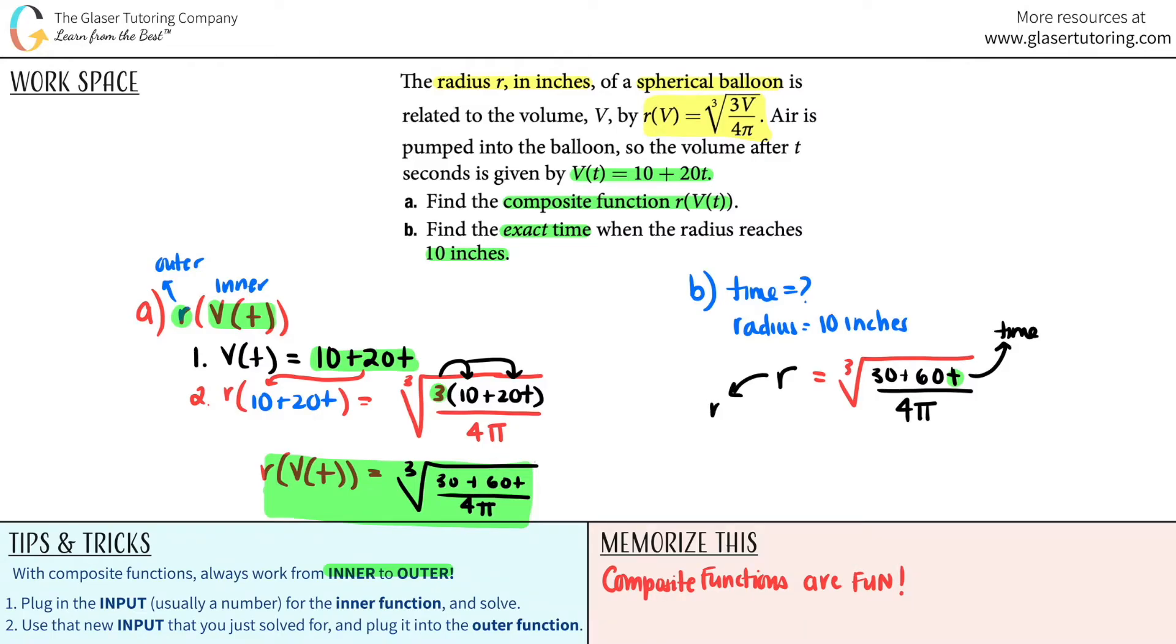Now we just have one formula where I need to find the time when the radius equals 10. Where am I going to put the 10 guys? Am I going to put the 10 on this side for the r or am I going to put the time on this side or the 10 on this side for the t? What do you think?